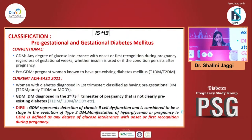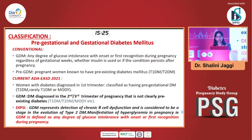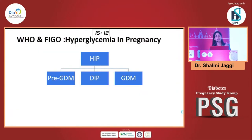DIPSI clearly understands that gestational diabetes actually represents a detection of chronic illness and dysfunction and is considered just a stage in the evolution of type 2 diabetes. Therefore, irrespective of anything else, what we need to understand is that gestational diabetes has to be defined as any degree of dysglycemia with onset first detected in pregnancy. The medical instruments, FIGO, have currently come out with an umbrella term: hyperglycemia in pregnancy.